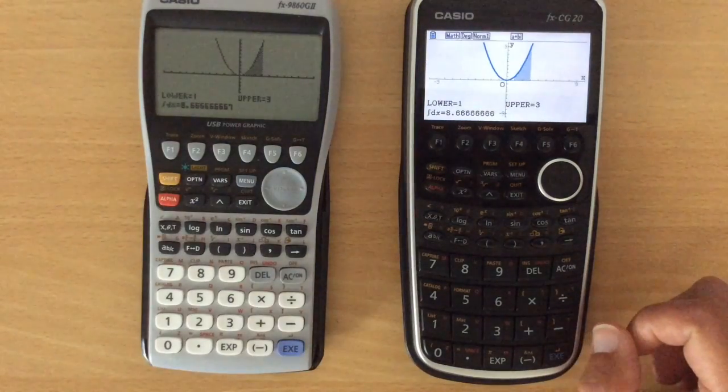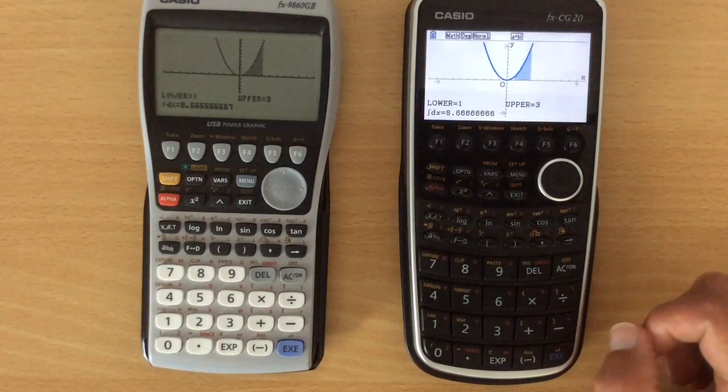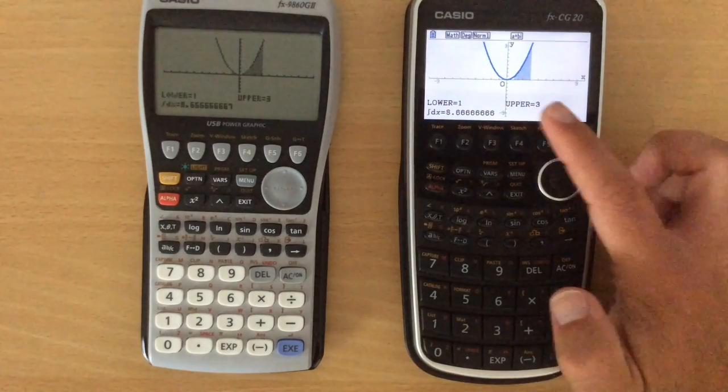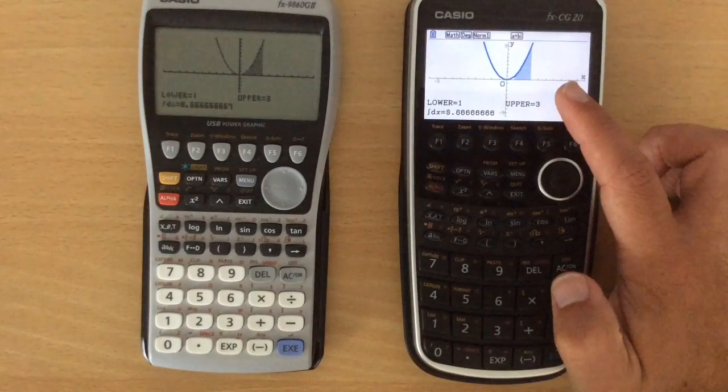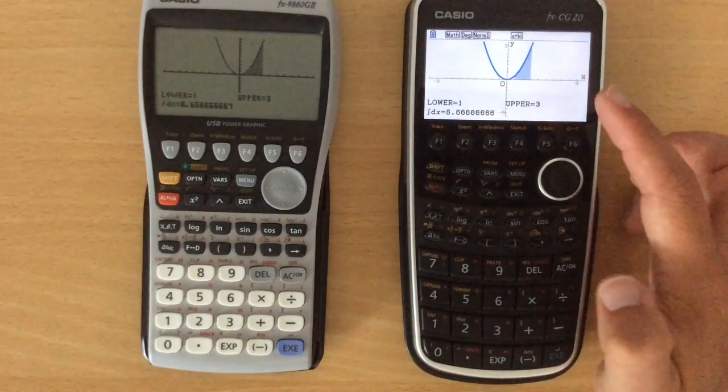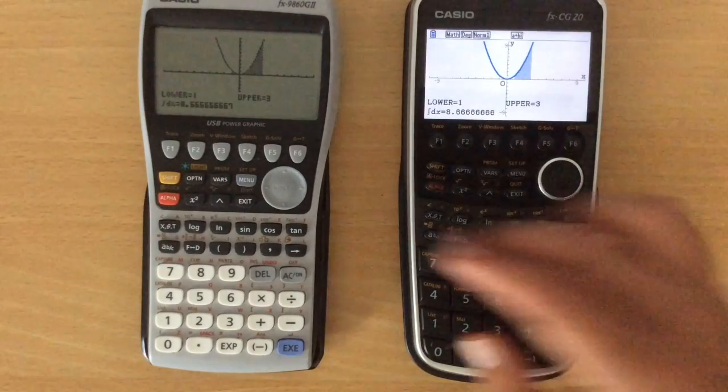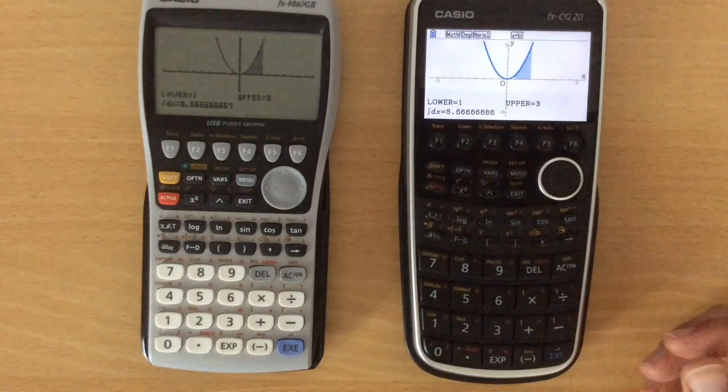It's not actually doing algebraic manipulation, it's doing a numerical method to solve that value. So this is quite nice that it shows you in real time how it's working out. Obviously, I've chosen quite a simple graph here. Had I chosen a more complicated one, it would take that little bit longer in drawing that, and it will show you how it's working out, whereas this one will just chug away and gradually give you the answer.